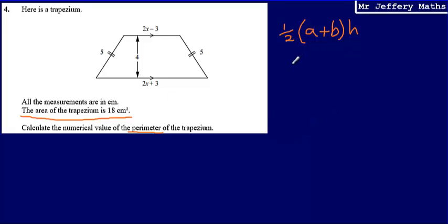So what I can then say is that half of 2x minus 3 plus 2x plus 3 multiplied by the height, which is 4.